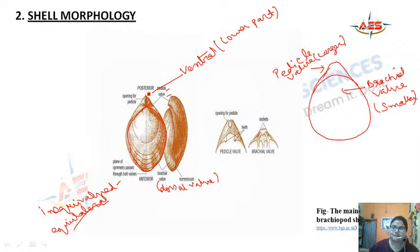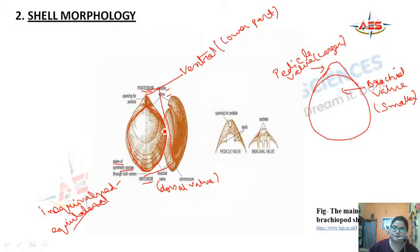The bilateral symmetry plane passes along the anterior-posterior margin across the shell and divides it into two equal halves. When one half is superimposed on the other, it forms a mirror image — this is bilateral symmetry.